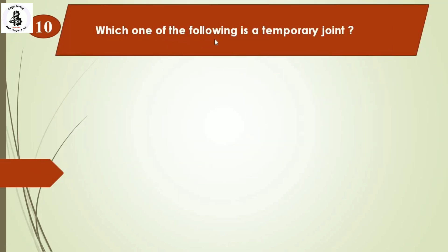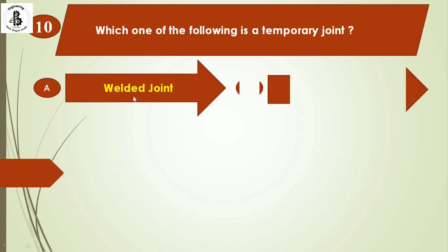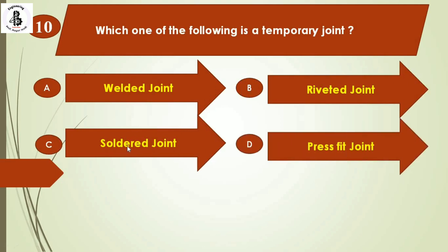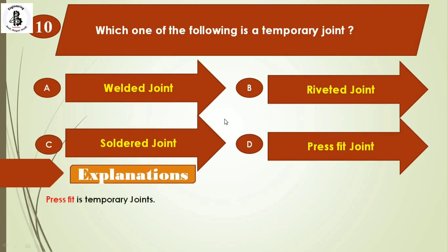The next question: which one of the following is a temporary joint? Option A: welded joint, Option B: riveted joint, Option C: shoulder joint, Option D: press fit joint. As per practical concerns, a press fit joint is considered a temporary joint. The others — welded joint, riveted joint, and shoulder joint — are considered permanent joints. The right answer is Option D.